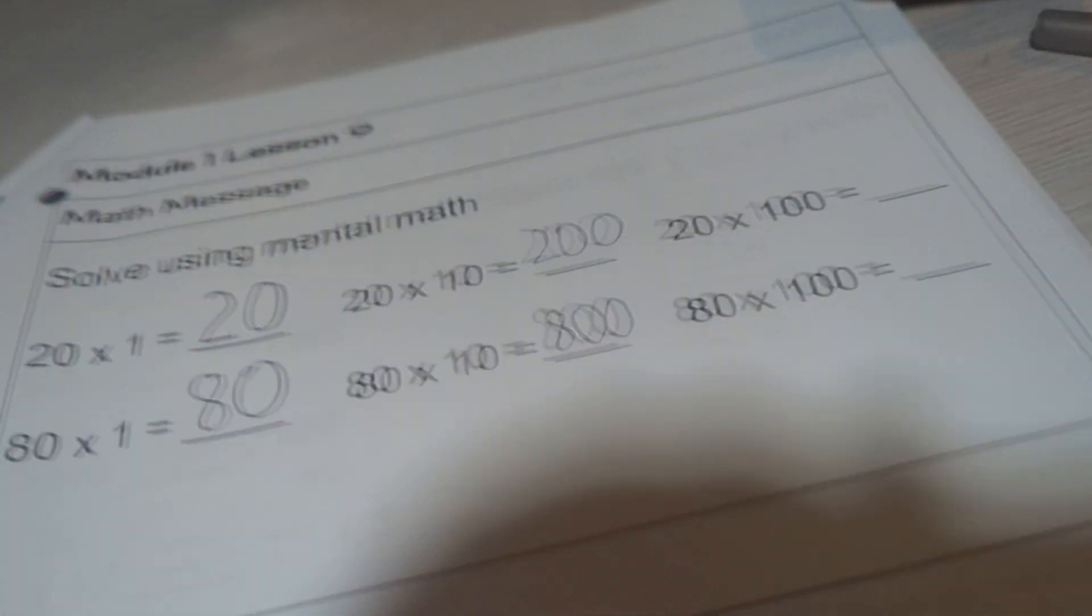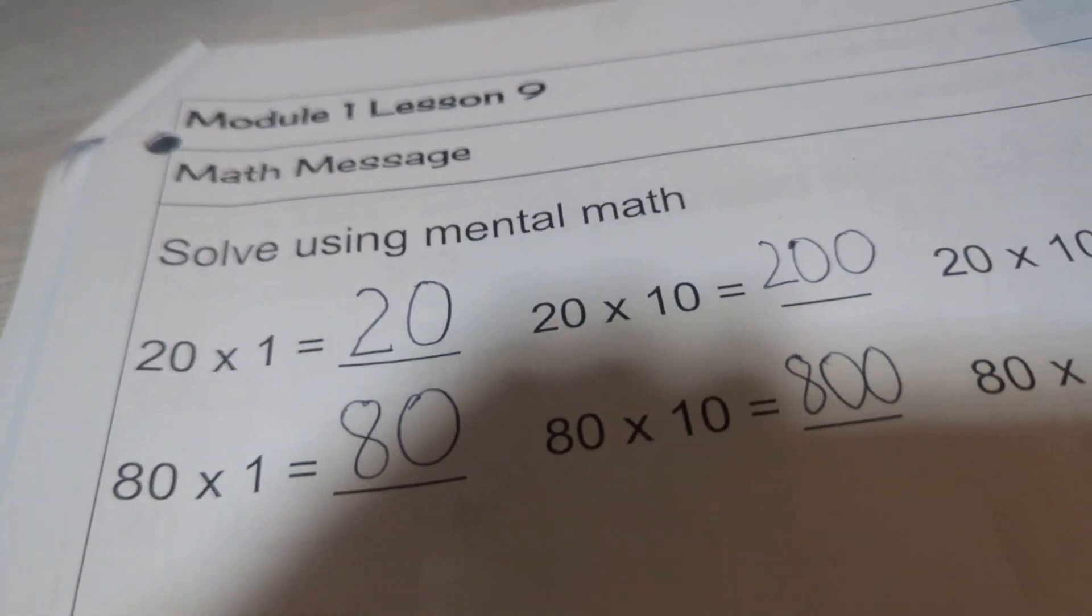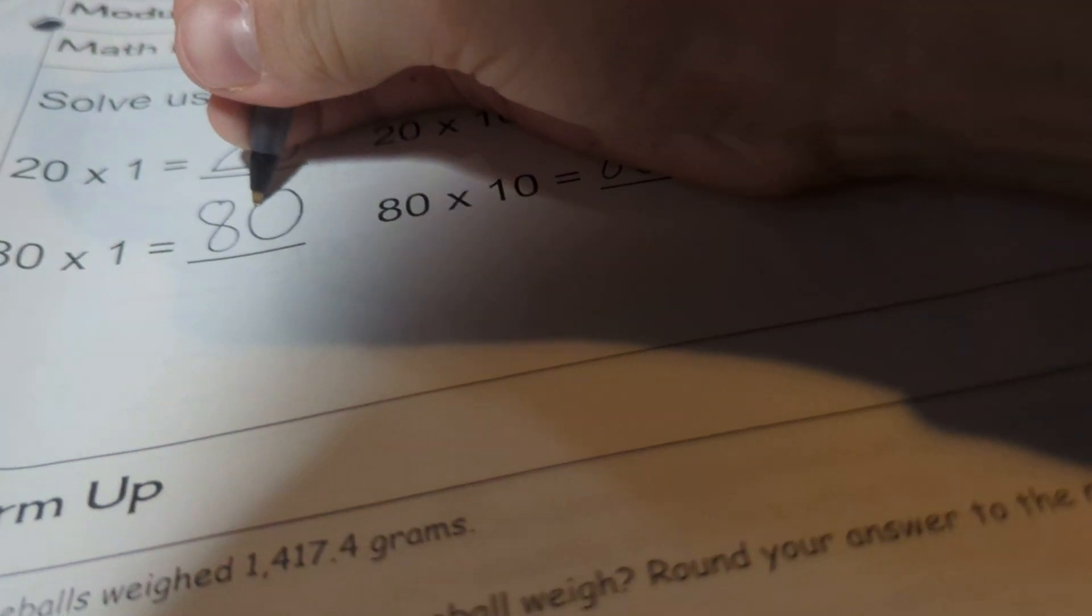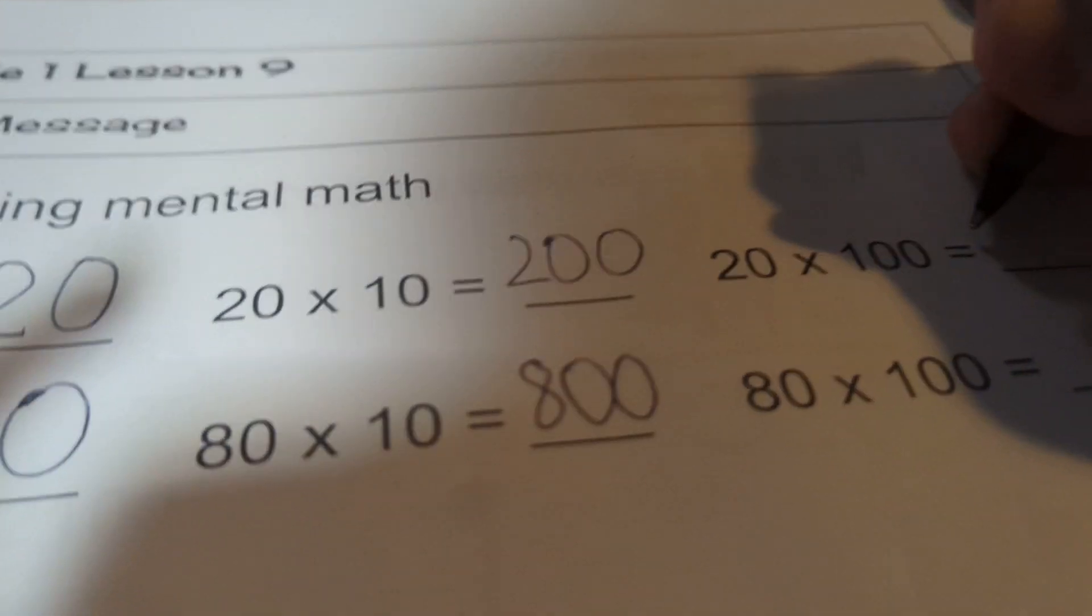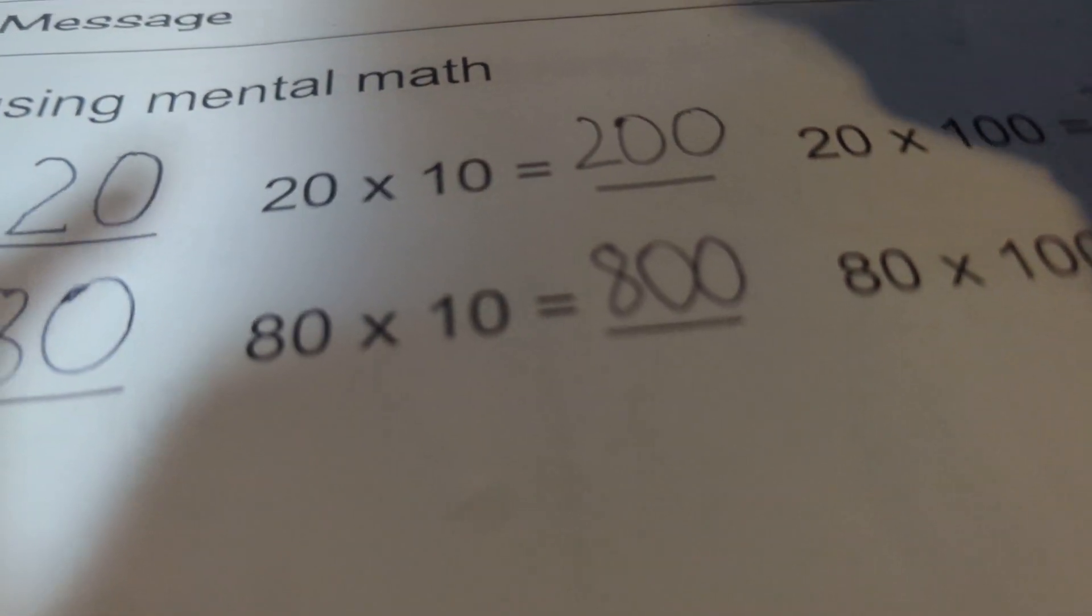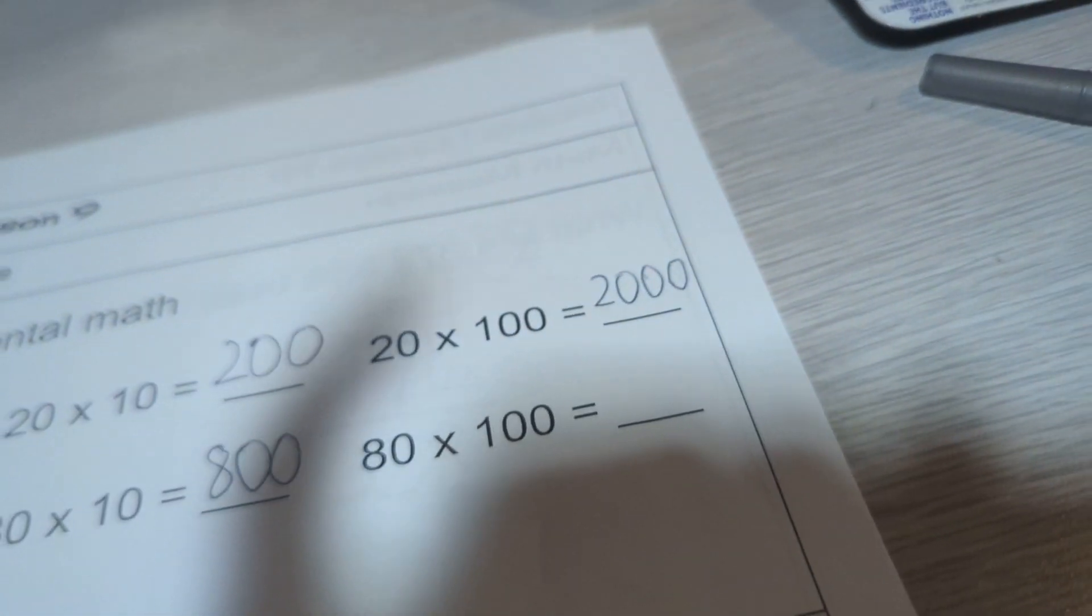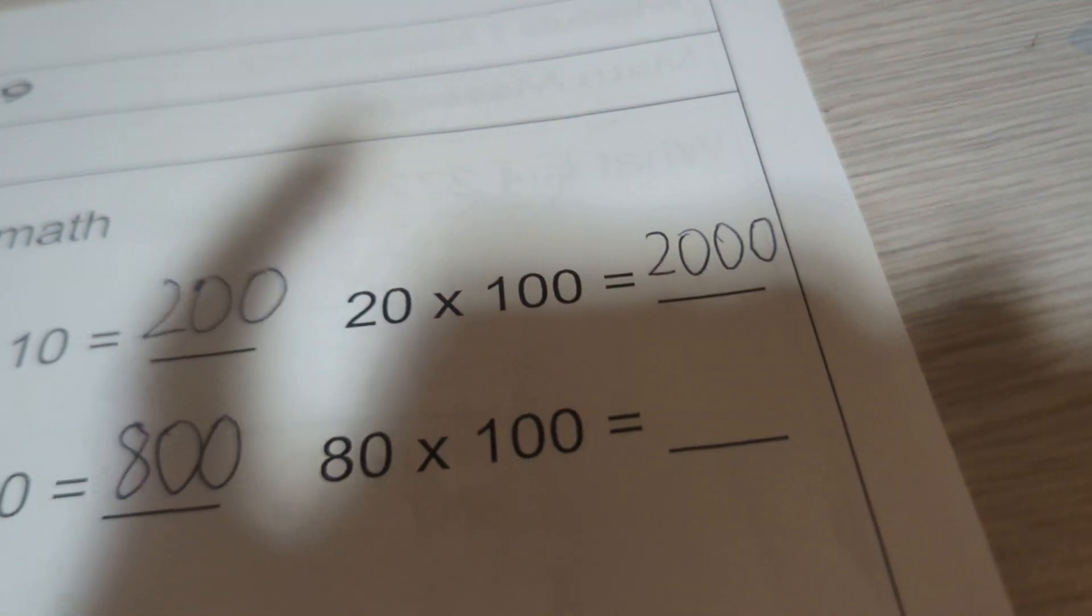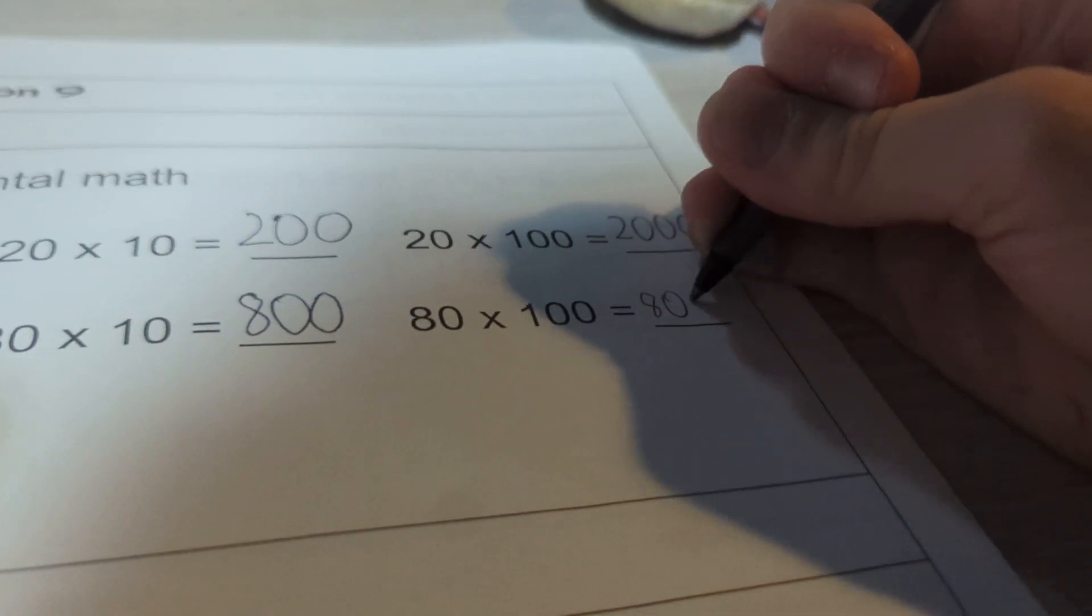So you got 800, 800, 200, 20, and 80. Now we'll do 100. So yeah, 20 times 100, you get 2,000. 80 times 100, you get 8,000. Great job.